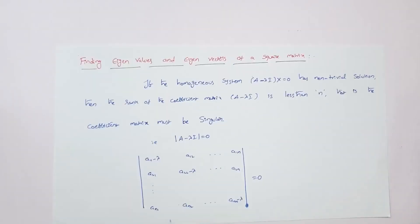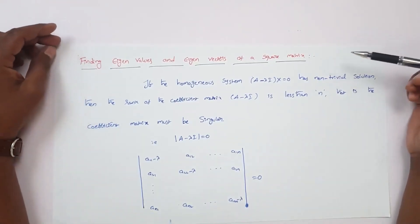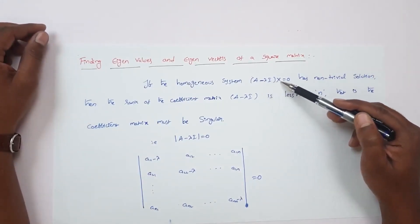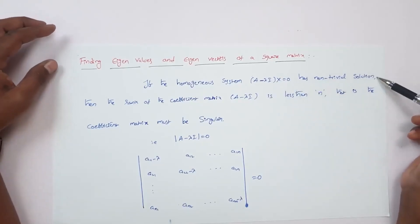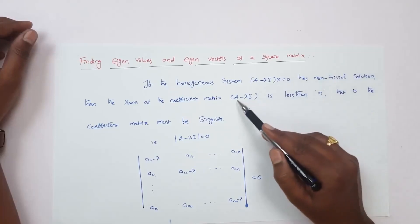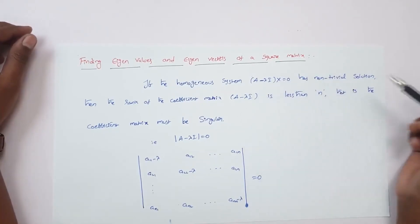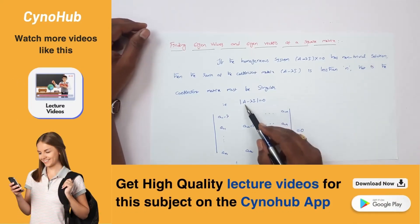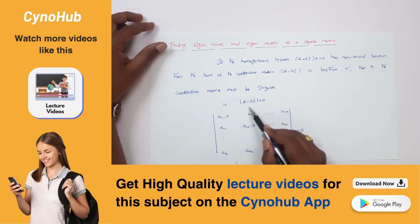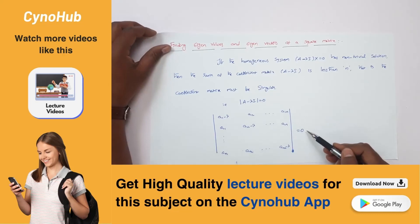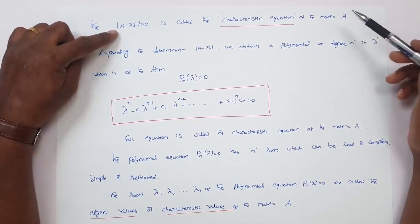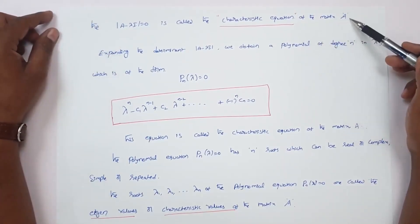Now we find eigenvalues and eigenvectors of a square matrix A. If the homogeneous system (A minus lambda I) times X equals zero has a non-trivial solution, then the rank of the coefficient matrix A minus lambda I is less than n. That is, the matrix A minus lambda I must be singular — that is, the determinant of A minus lambda I equals zero. The equation determinant of A minus lambda I equals zero is called the characteristic equation of the matrix A.